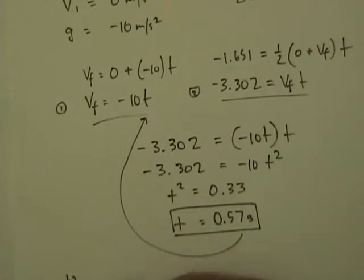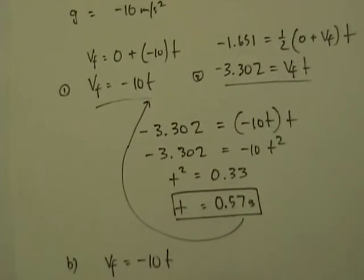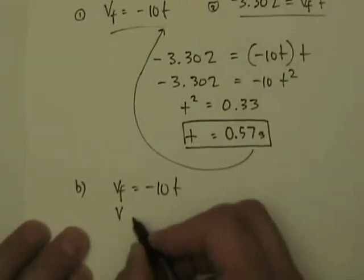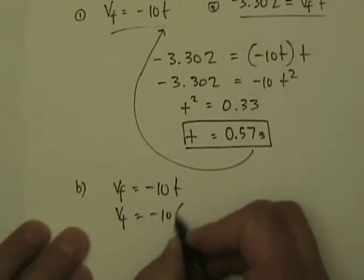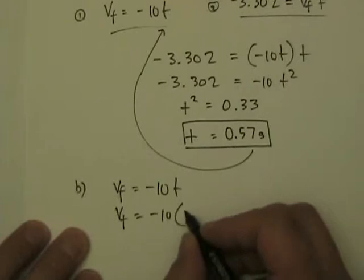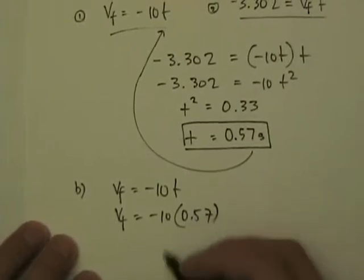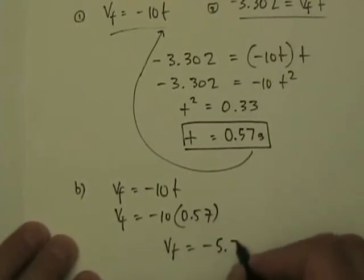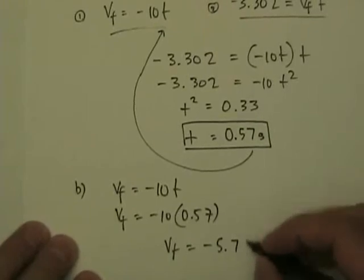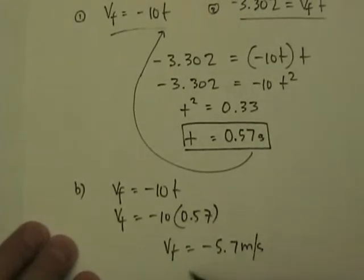So for part B, I'm going to use VF equals minus 10 T. Final velocity minus 10 times 0.57. So your final velocity is minus 5.7 meters per second.